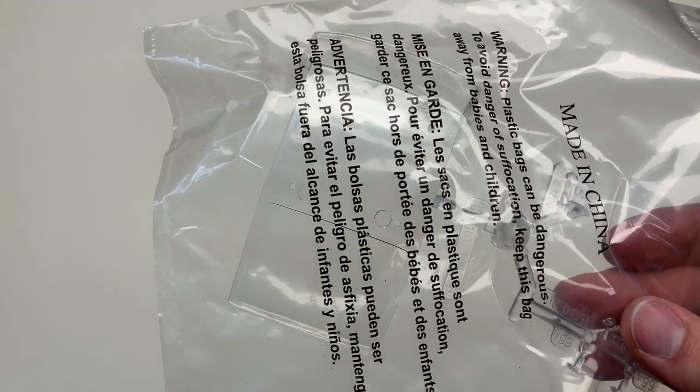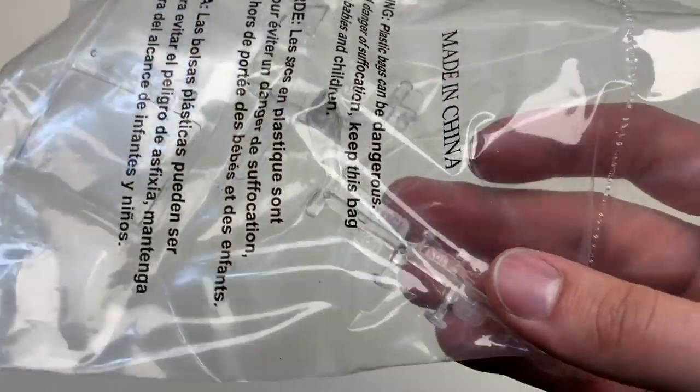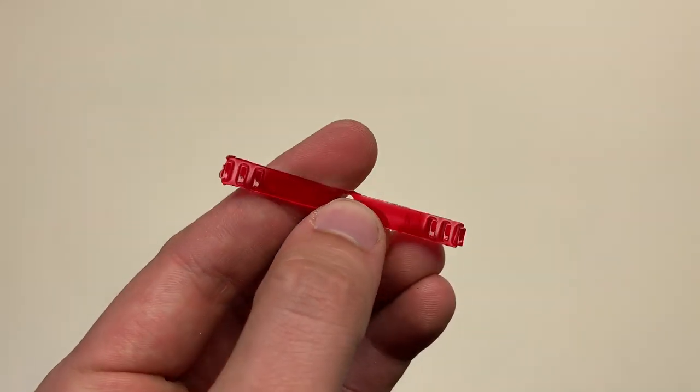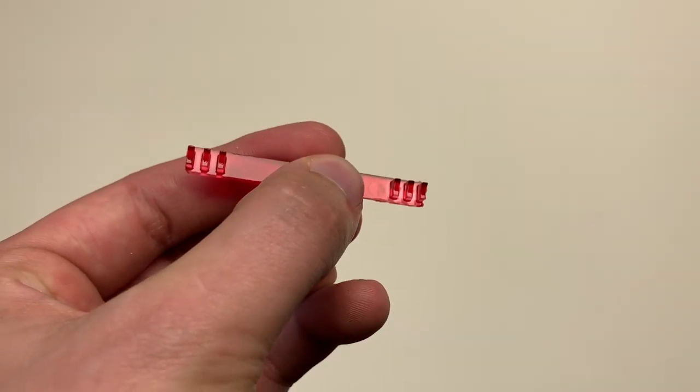For the clear parts, you get one sprue with the main clear part itself for the windows and the headliner in one, and a couple of parts for the headlights as well. And then there is a red tinted one for the taillight section, which is nice, because you don't really need to paint it yourself, and just can glue it in easily.